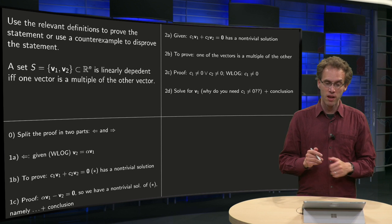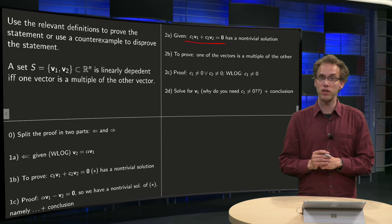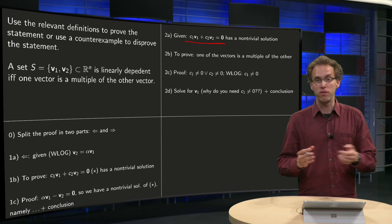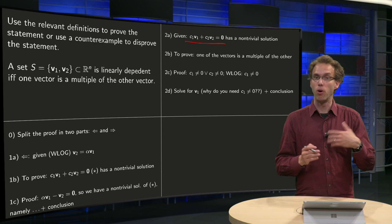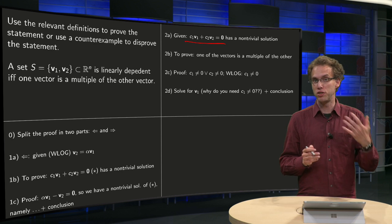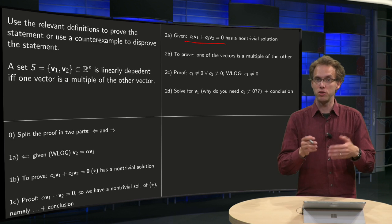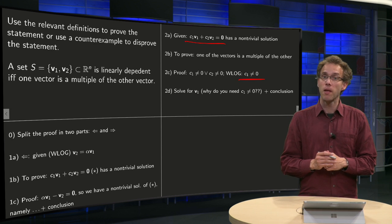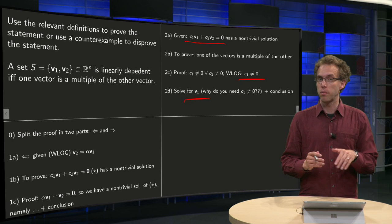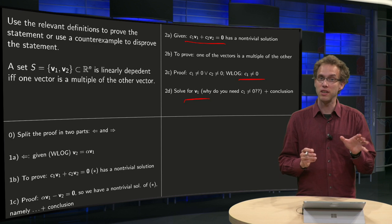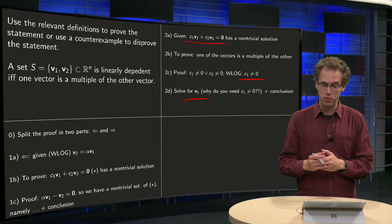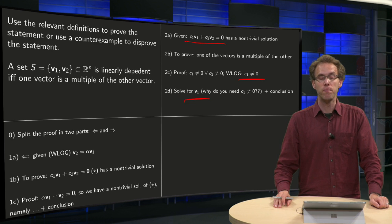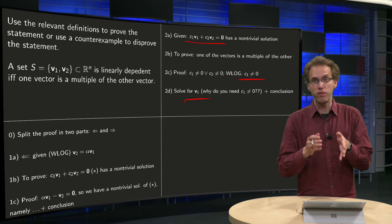Now go the other way around. Given that we have a non-trivial solution of this equation, we have to prove that one of the vectors is a multiple of the other. We know that either c1 is non-zero or c2 is non-zero, or both. Without loss of generality, we assume it's the first one — otherwise you can do the same argument but reverse the roles of c1 and c2. So we assume c1 is non-zero. Then we can solve for v1 — notice why you need c1 to be non-zero here. We see that v1 is a multiple of v2, and we can conclude that if S is dependent, then one vector is a multiple of the other.